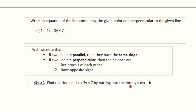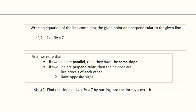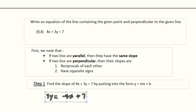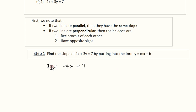And we do that by putting it in the form y equals mx plus b. The first thing we're going to do is subtract 4x from both sides. When we subtract 4x from both sides, we get 3y is equal to negative 4x plus 7.